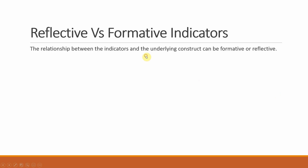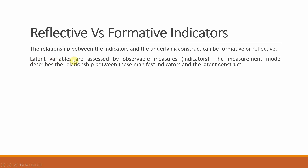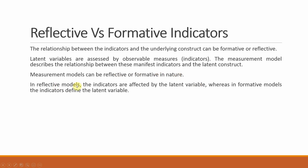How do we differentiate between reflective and formative indicators? The relationship between the indicators and the underlying construct can be formative or reflective. The measurement model describes the relationship between these manifest indicators and the latent construct. In reflective models, the indicators are affected by the latent variable, so arrows point towards the indicators. In formative models, the indicators define the latent variable, so arrows point towards the latent variable.